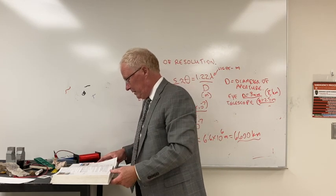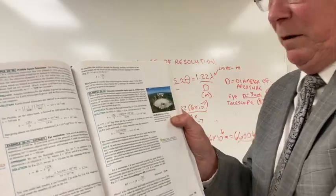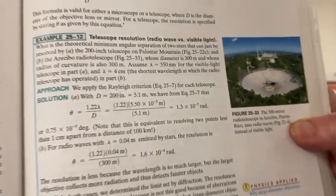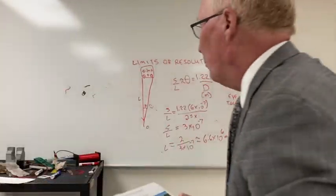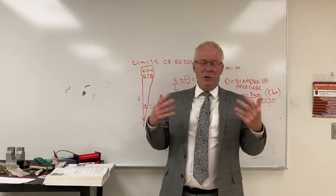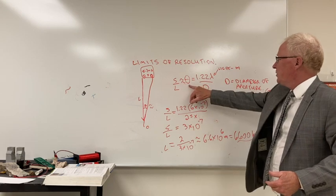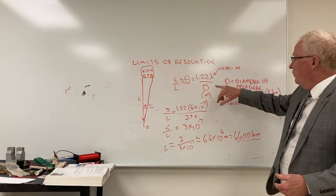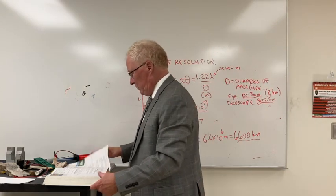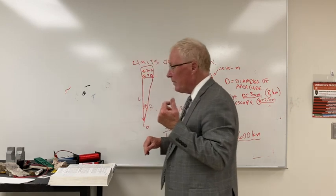The bigger the telescope, the better. The Arecibo telescope, which unfortunately collapsed last year, had a diameter of 300 meters — the length of three football fields — but it used radio waves. The key expression is S/L = theta = 1.22 × lambda / D, where both lambda and D are in the same units, with meters being easiest. That is chapter 25, the last chapter.